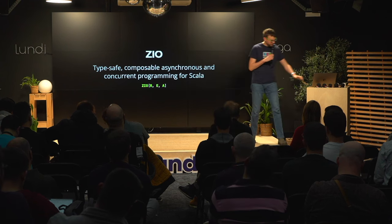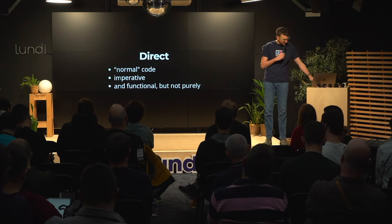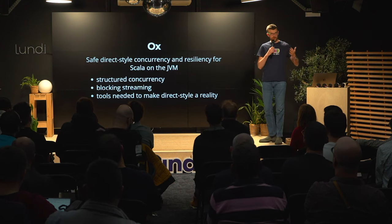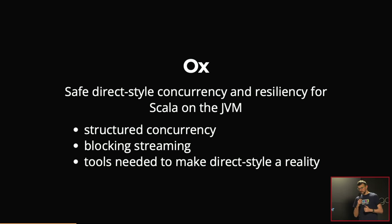On the other hand, direct-style programming is normal code — more imperative, like coding as we were taught in Pascal or whatever. We are not saying goodbye to functional programming entirely. We still use immutable data, expressions first, and so on, but it's not pure functional programming. Direct style will be supplemented by Ox, a library for safe direct-style concurrency and resiliency for Scala on the JVM, covering structured concurrency, blocking streaming, and various tools to make the direct style a practical reality.